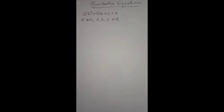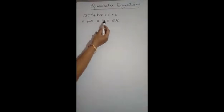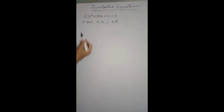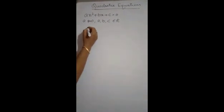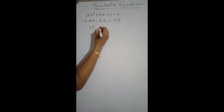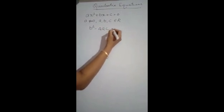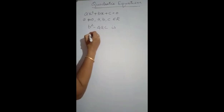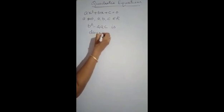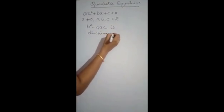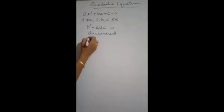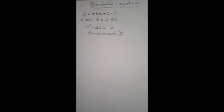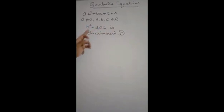In the quadratic equation ax squared plus bx plus c is equal to 0, where a is not equal to 0, the expression b squared minus 4ac is called the discriminant and it is denoted by d.